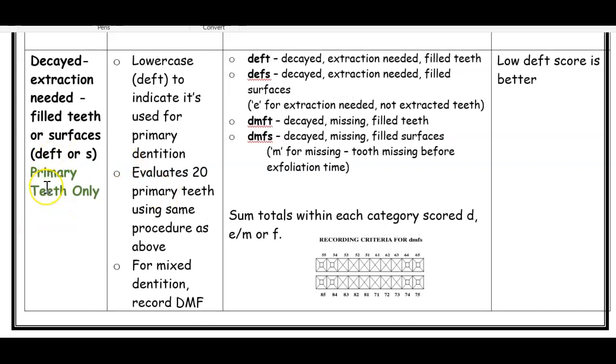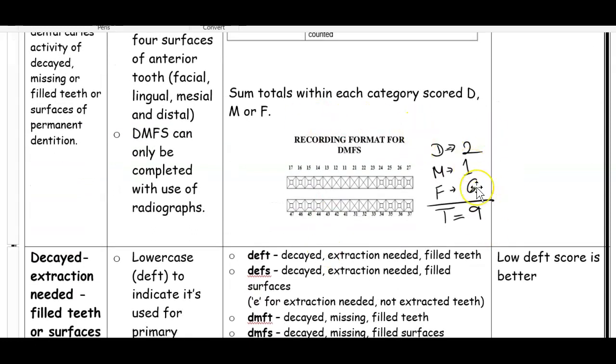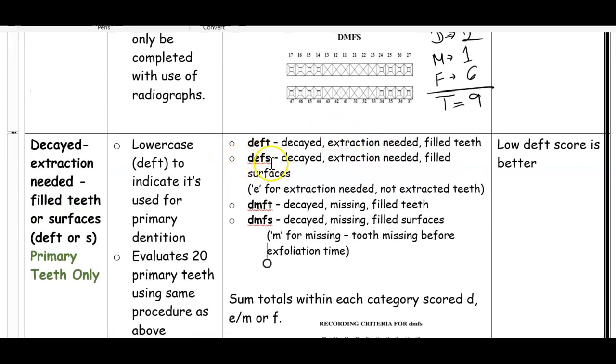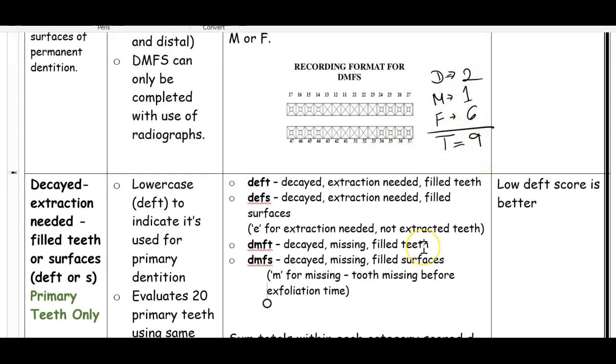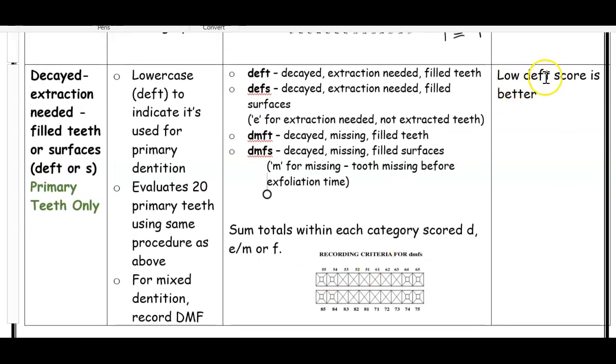When we're looking at primary teeth, instead of saying DMF-T or DMF-S, we say D-E-F-T for teeth or D-E-F-S for surfaces. And notice it's in lowercase. So the reason why it's in lowercase is to differentiate the primary dentition from the adult or permanent dentition. So D stands for decayed. So again, we look for any decayed teeth. Then we look to see if any teeth needs an extraction because of caries. So perhaps the decay was so bad that it needs an extraction. So E means that extraction is soon needed. And F looks at filled teeth. And then what you do, you could also do it by surfaces where you look at each surface separately, or you could look at it by teeth, where you look at each tooth as a whole. So either whatever you decide, deft or defs, D-E-F-T or D-E-F-S, you would tally it up accordingly. And again, the lower the score, the better it is.